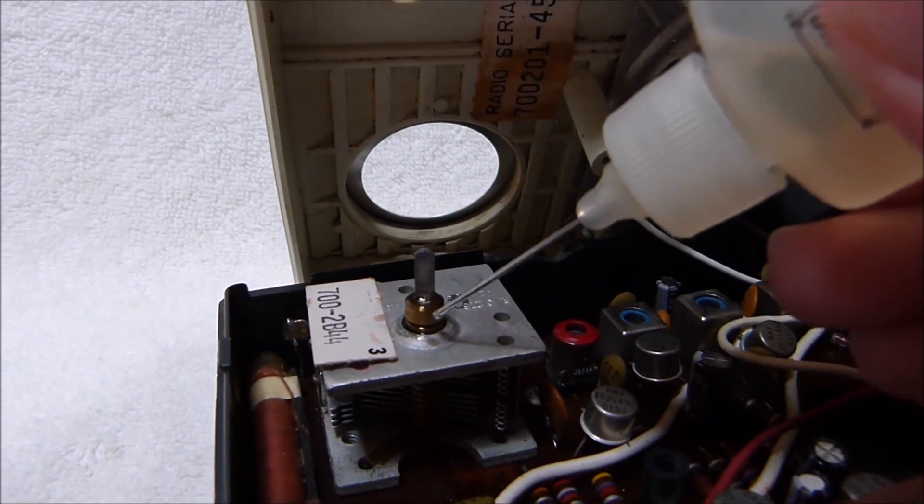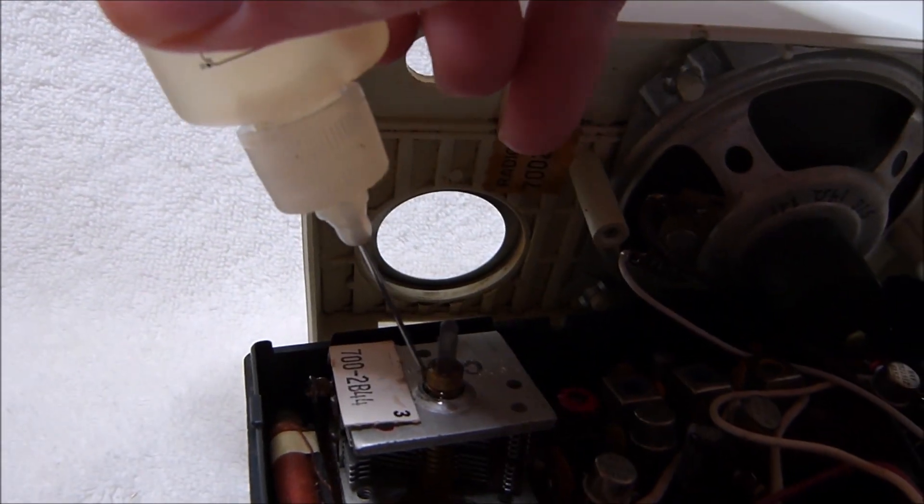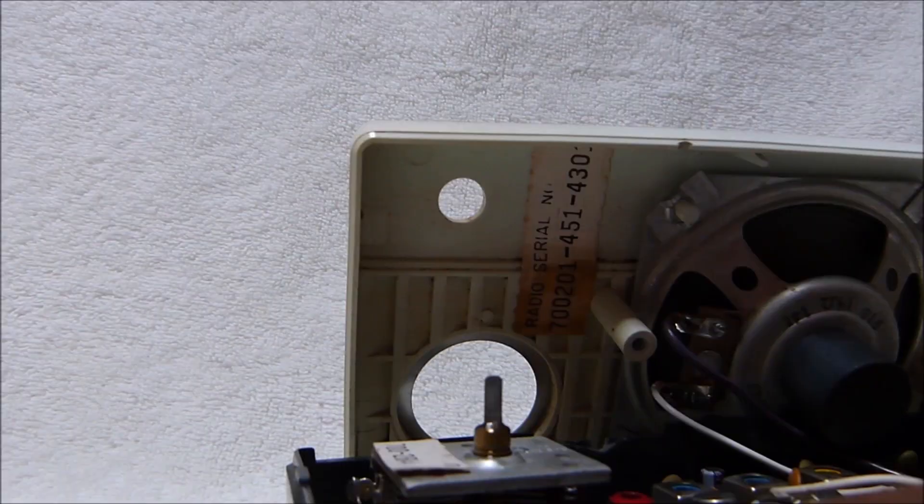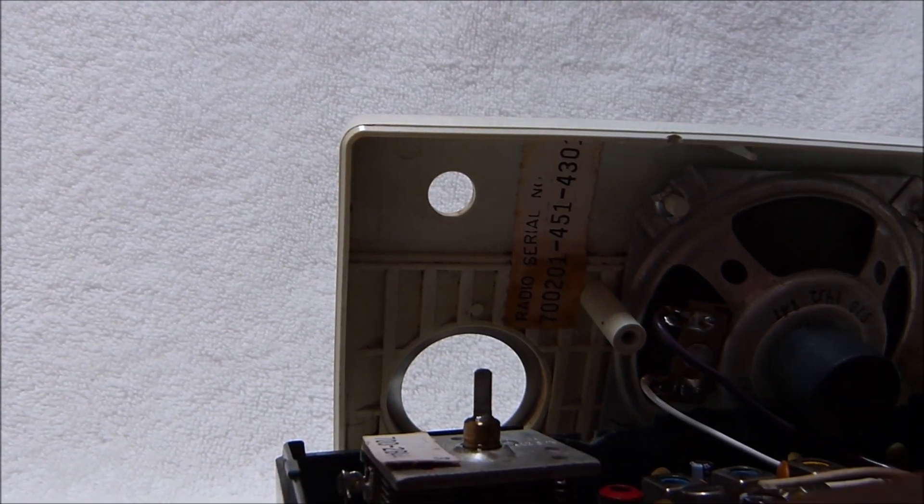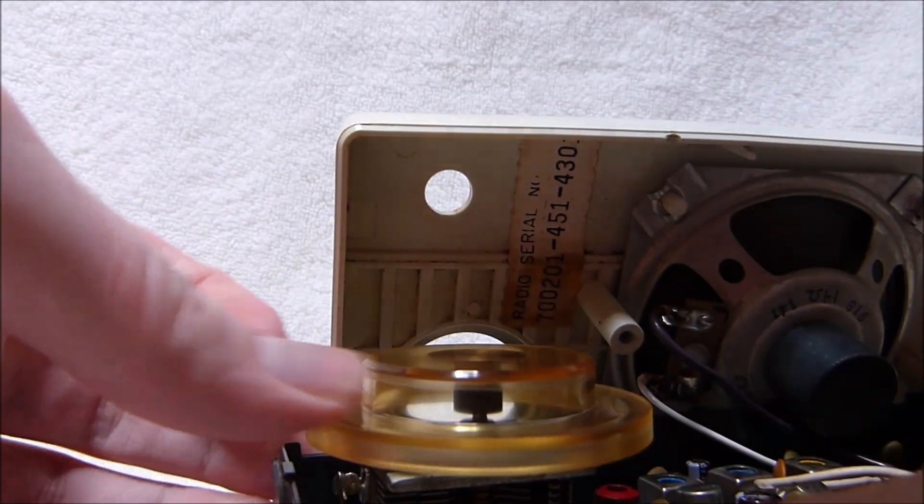So I put on a generous amount to all the bearings. I'm dropping it on the ball bearings in there. There's three ball bearings. And then put the tuning dial back on there. You don't need to put them both on, just put on the one you actually turn.